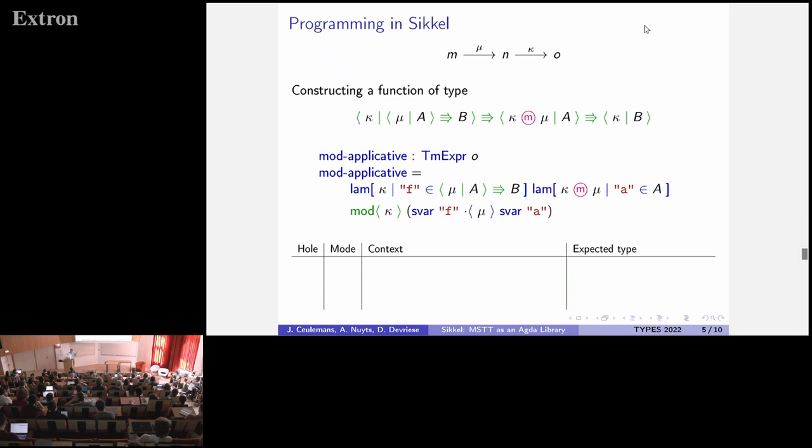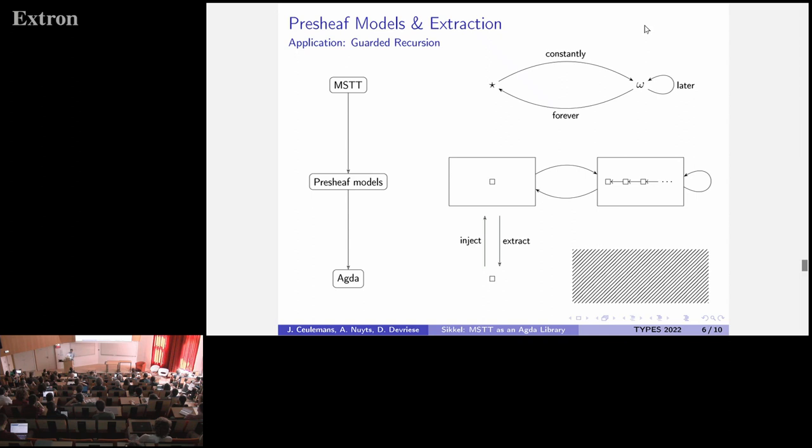Okay, so now we have a program written in MSTT or, well, written in SICKL. What can we actually do with it? And, well, to illustrate that, I'm going to use a concrete application that we've developed in SICKL, and that's guarded recursion. So here you can, at the top, you can see a mode theory for guarded recursion with two modes and a couple of modalities, among which the later modality.